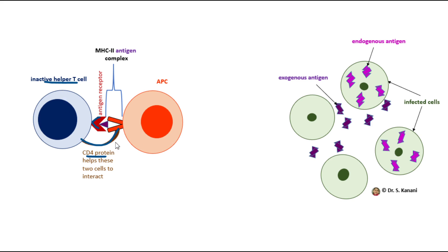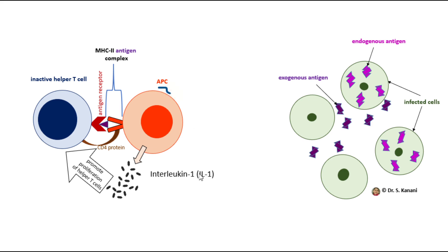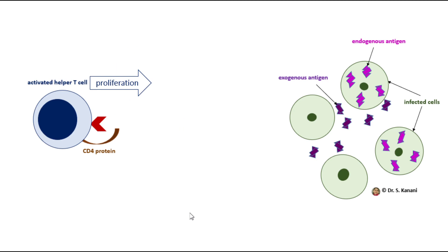Some antigen-presenting cells, such as macrophages, release a cytokine called interleukin-1. One important effect of interleukin-1 is that it promotes proliferation of helper T-cells. We need helper T-cells to divide rapidly because there is a very large number of microorganisms invading our tissues, and activating only one helper T-cell is not sufficient — one cell cannot fight so many microbes.